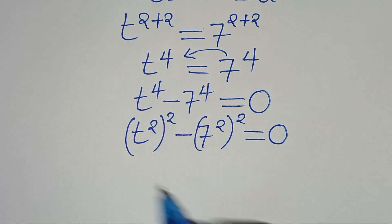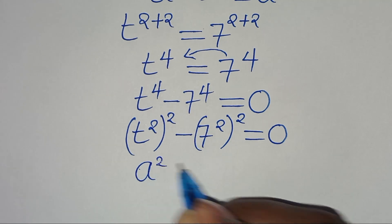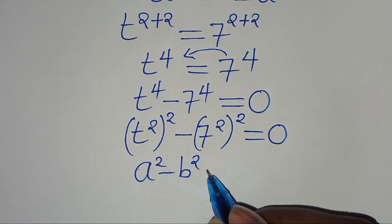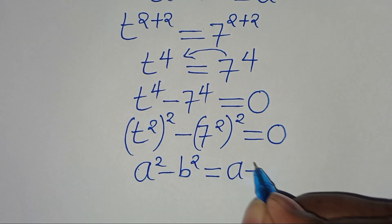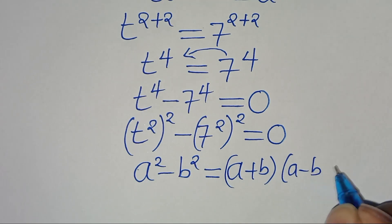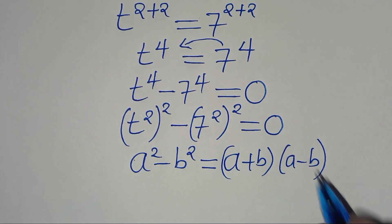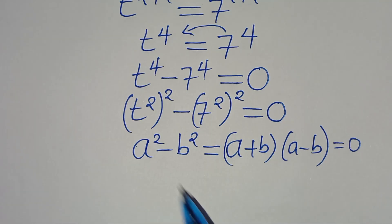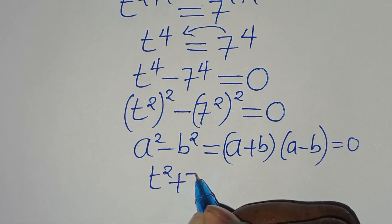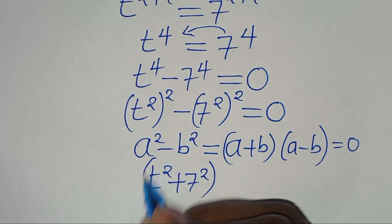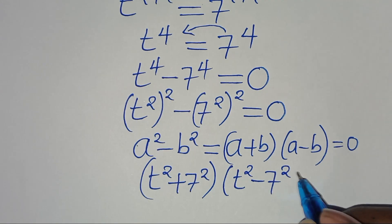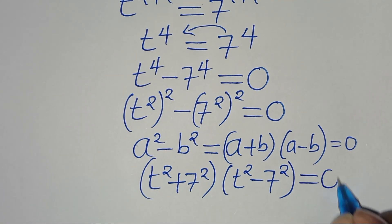This equation is in the form of a squared minus b squared — the difference of two perfect squares — which we can express as (a plus b) multiplied by (a minus b). In our case we have t squared plus 7 squared, multiplied by t squared minus 7 squared, equal to 0.